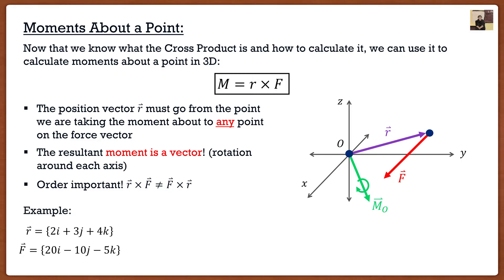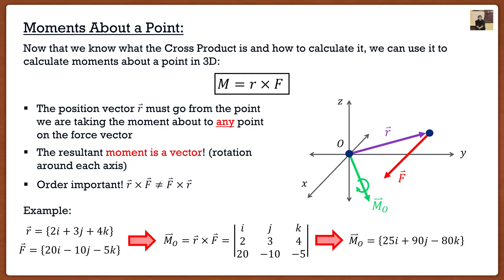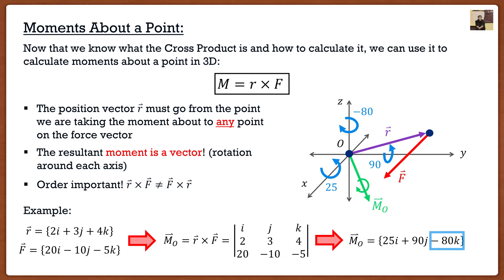The best way to show you what this moment vector means is with an example. I have my position vector and my force vector, and I want to find the moment about point O. I can use the fish method or any method you're comfortable with to find the moment as a vector. Each one of the components is the moment about that specific axis. So a 25i component means the moment around the X-axis is 25. For the Y-axis it's the 90j, and for the Z-axis it's negative 80. The cross product gives us all the information we need, whereas the first method just gave us a random number with no information.